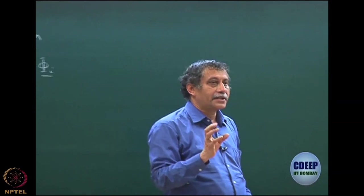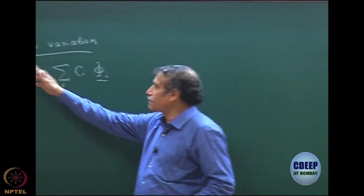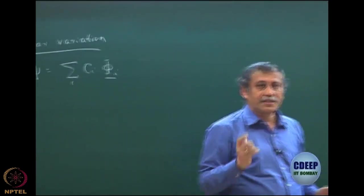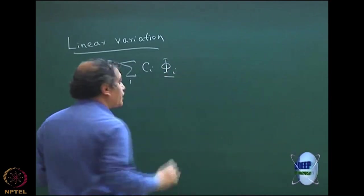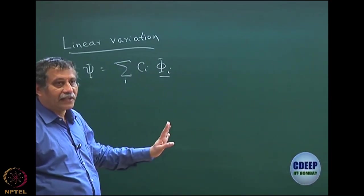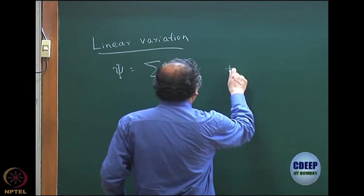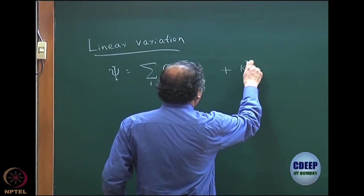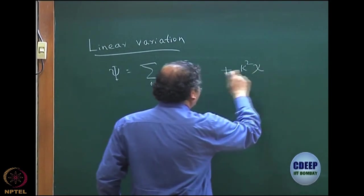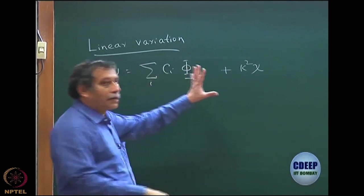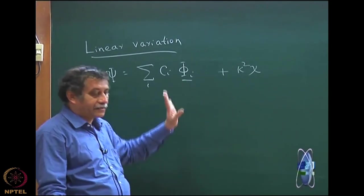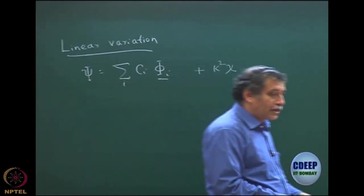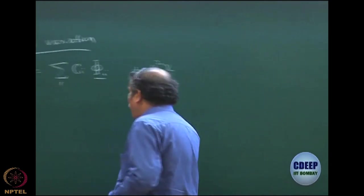Linear variation means the parameters you are varying appear linearly in the expansion of the function. So the C's are linear. If there is a C-squared term, it is no longer linear. If I had added one more term — say k-squared times some other chi, another known function — this would no longer be linear variation because k is an unknown parameter appearing as a quadratic term. So what we are talking about is only for linear variation.